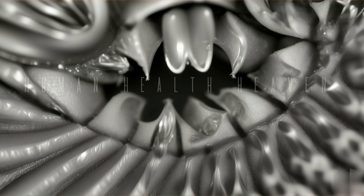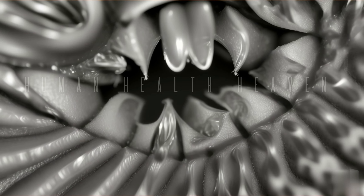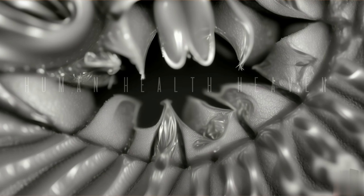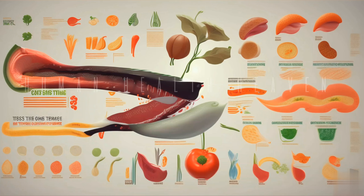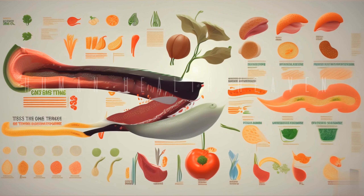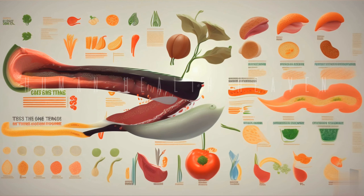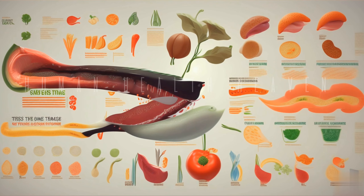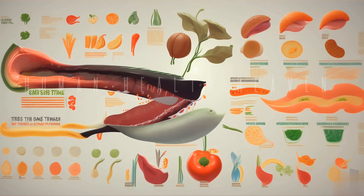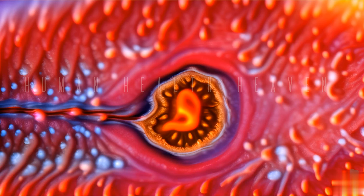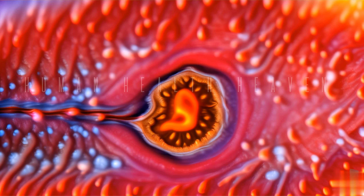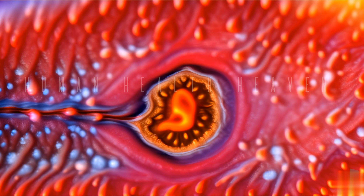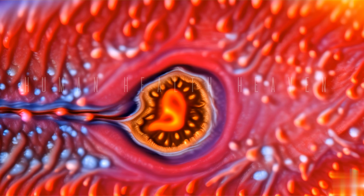Foliate papillae: these papillae are on the sides of the tongue and help sense deep tastes. Fungiform papillae: these are red in color and help sense sweet and sour tastes. Conical papillae: these papillae are on the back of the tongue and help in the perception of taste. These papillae play an important role in the tongue's ability to perceive taste.